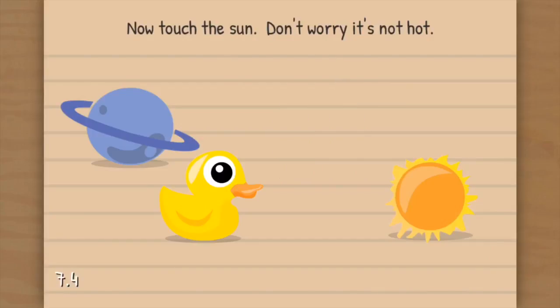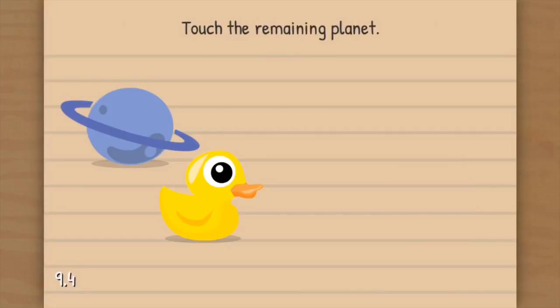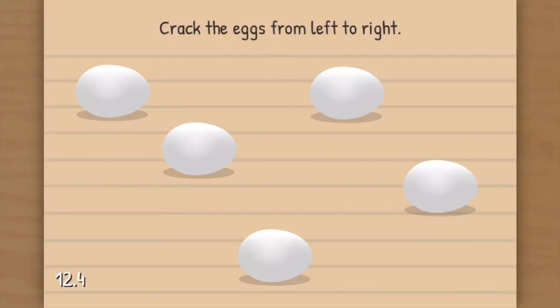Now, don't touch the sun. Don't worry, it's not too hot. Okay, playing the moron test because I'm not a moron. I'm very smart. Touch the plus sign. I did it. Crack the eggs from left to right. Okay, I can do that.